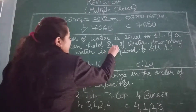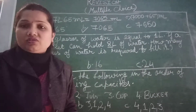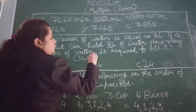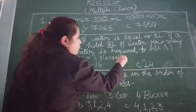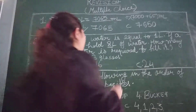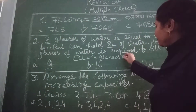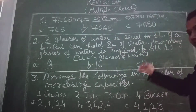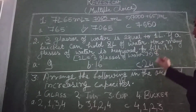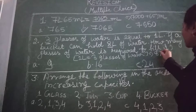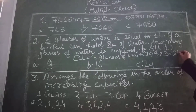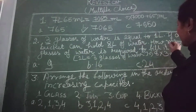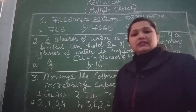So simply we will multiply 8 litres by 3, because if 1 litre is equal to 3 glasses of water, then for 1 bucket it will be 8 into 3. So the answer here is 24. It means 24 glasses of water are required to fill the bucket. So option C will be the correct answer.